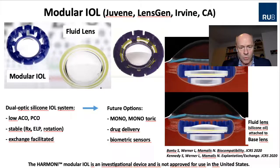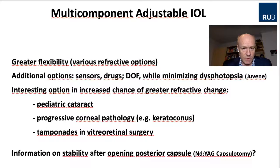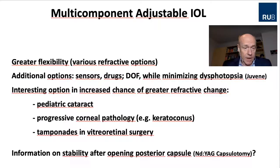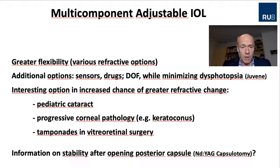Future options include monofocal, monofocal toric, drug delivery, or biometric sensors like IOP sensors. All these multi-component adjustable IOLs offer greater flexibility, additional options like sensors, drugs, and depth of focus, and are a very interesting option in cases of increased chance of greater refractive change, such as pediatric cataract, progressive corneal pathology, or the use of tamponades in vitreoretinal surgery.